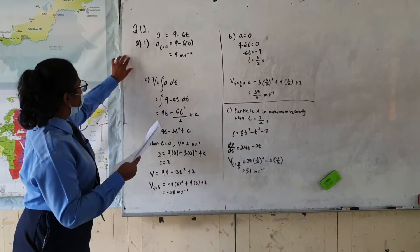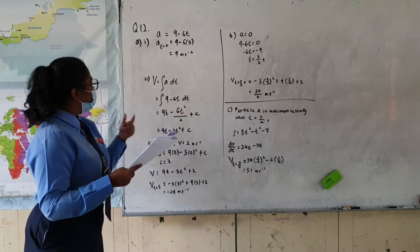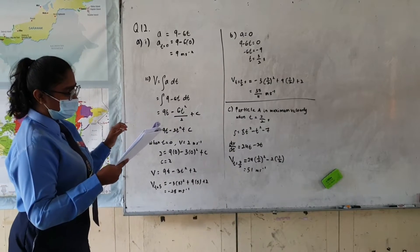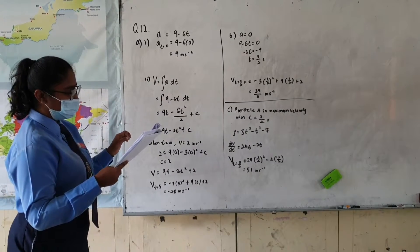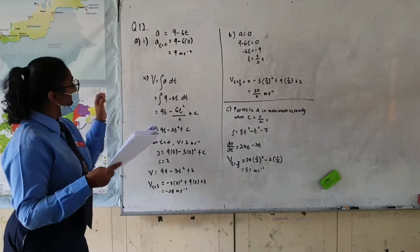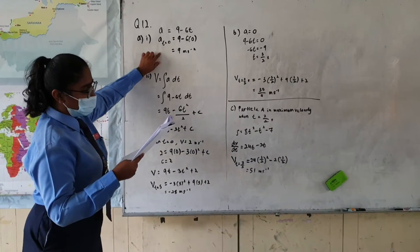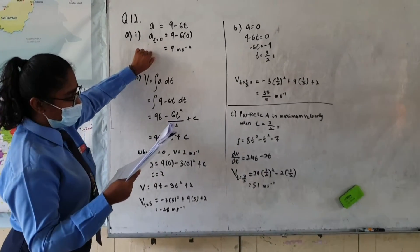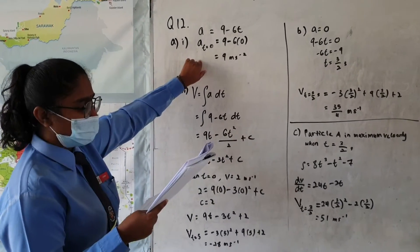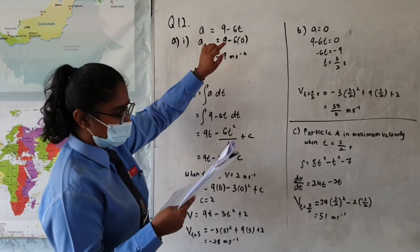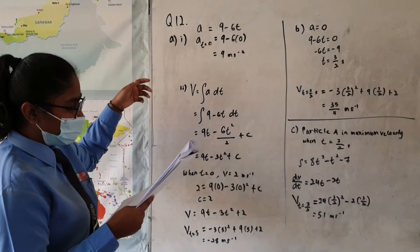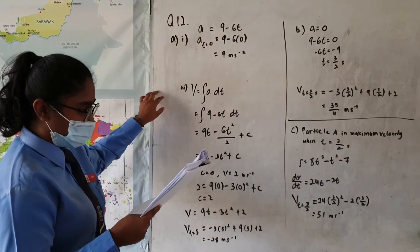For question A1, it is a technical problem. Particle A moves along a straight line and passes through a fixed point with a velocity of 2 meters per second. The acceleration is given by a equals 9 minus 6t, where t is the time in seconds after passing through the fixed point O.